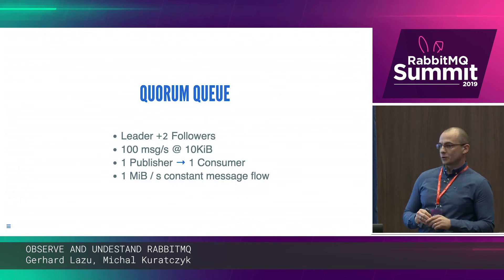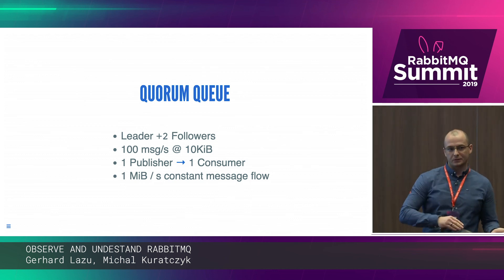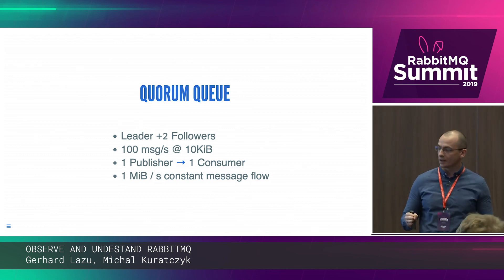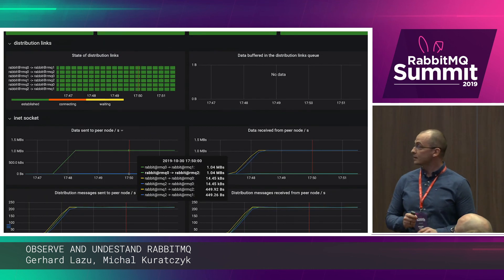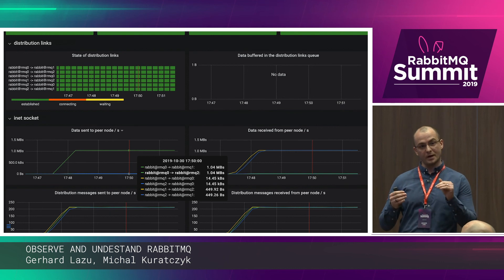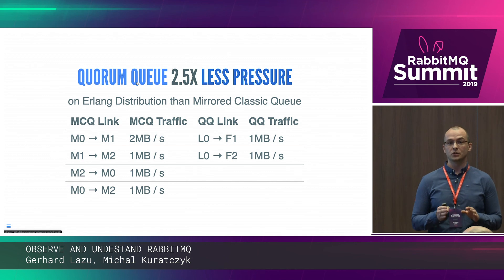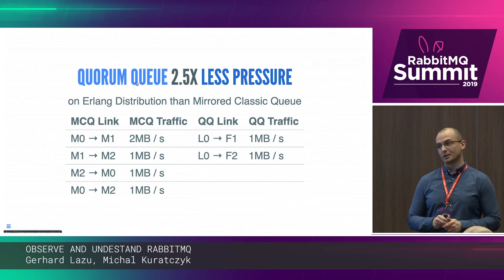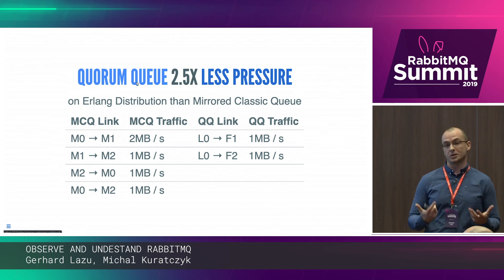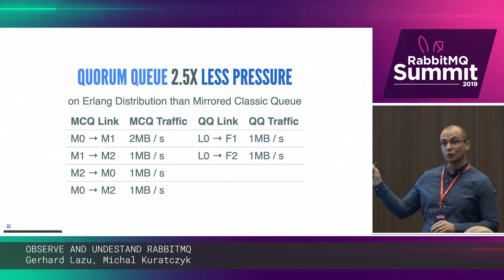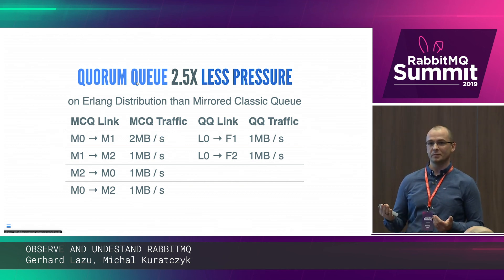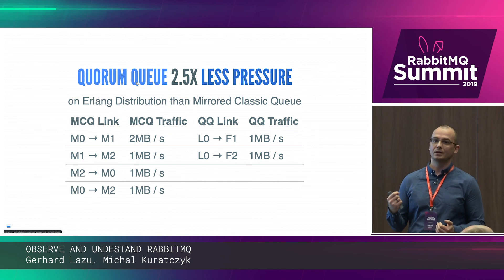Quorum queues — we've heard a lot about them. How are they different from mirrored classic queues? Same setup, same thing happening in the cluster. The difference is that we have only one megabyte going from the leader to one follower, and from the same leader to another follower — that's it. In summary, the quorum queue puts 2.5x less pressure on the Erlang distribution because of a much better replication algorithm. From a network perspective, you will be transferring less between nodes using quorum queues doing exactly the same thing that mirrored classic queues are doing.